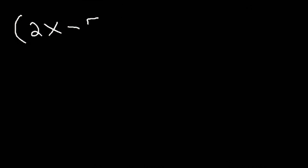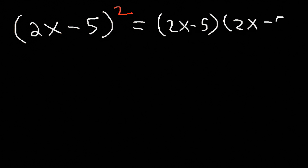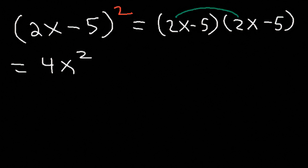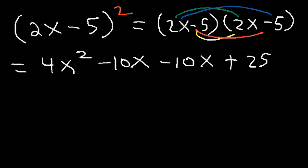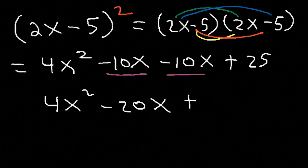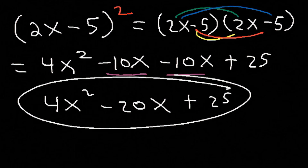Now what if you see an expression like 2x minus 5 squared? This simply means two binomials multiplied together — two copies of 2x minus 5. Let's FOIL: 2x times 2x is 4x squared. 2x times negative 5 is negative 10x. Negative 5 times 2x is also negative 10x. And negative 5 times negative 5 is positive 25. Combining: negative 10x minus 10x is negative 20x. So the answer is 4x squared minus 20x plus 25.